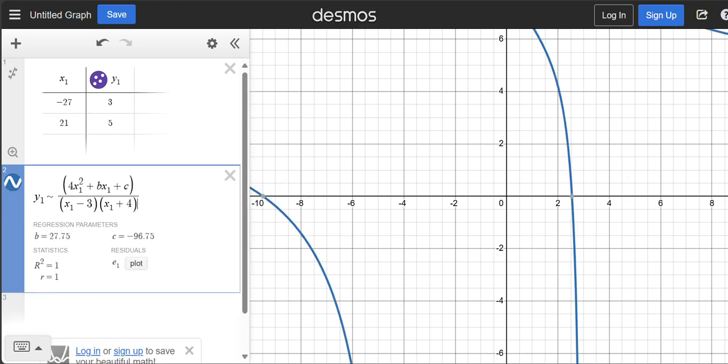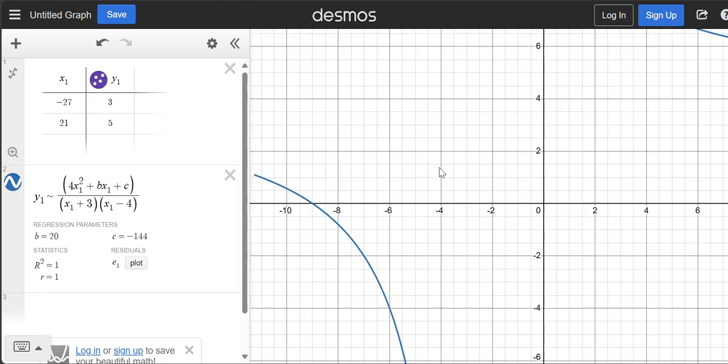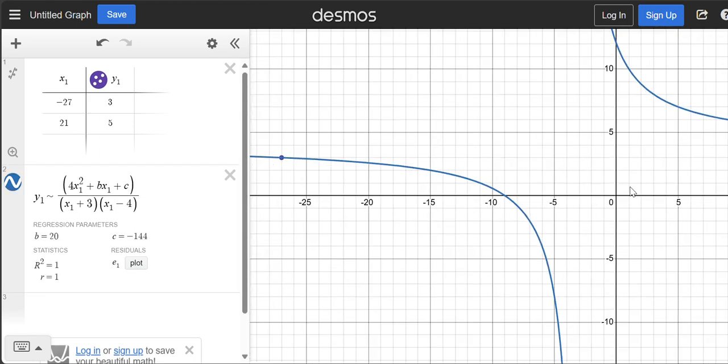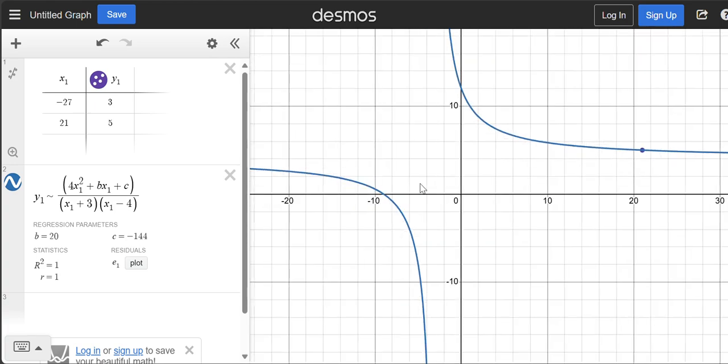I think I remembered that correctly. Let's just double check - so it's plus 3 and minus 4. All right, so what we can see from here then is that this is going to cross the x-axis here, right at negative 9.